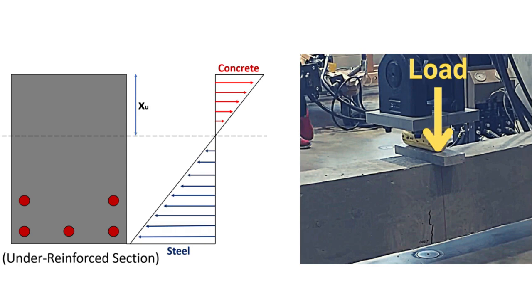In conclusion, under reinforced sections are often the preferred choice in RCC beams due to their safety and cost efficiency. They are designed in such a way that the failure of steel occurs before the failure of concrete, giving warning to the users and preventing sudden collapse. Additionally, under reinforced sections require less steel, resulting in significant cost savings.